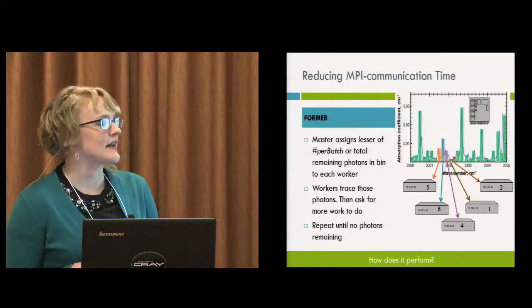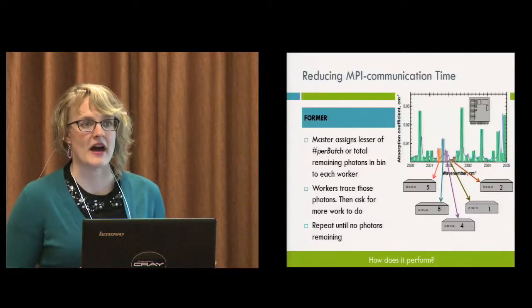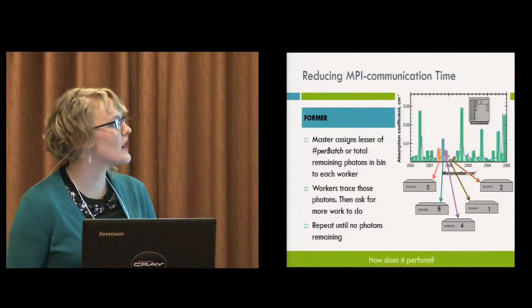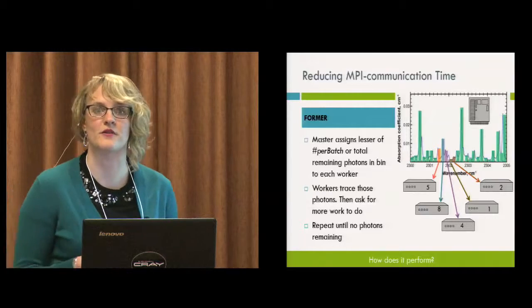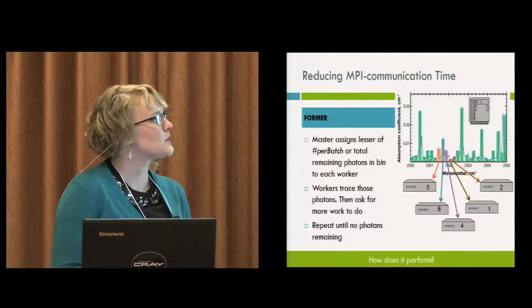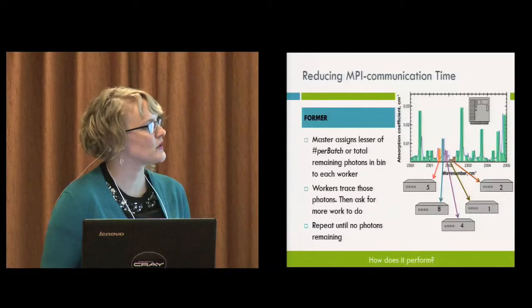Basically what it was doing is it was a master worker setup. So the master was assigning the lesser value of either the number of bundles per batch, which was set by the user at the start, or whatever was remaining in the bin containing the number of photons for each frequency. So it would, you know, give one of those to each worker. So that's sort of visually represented here.